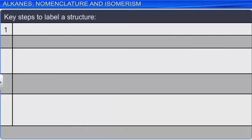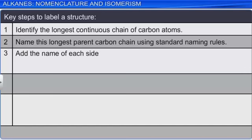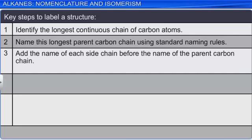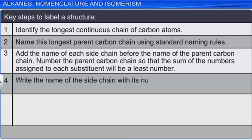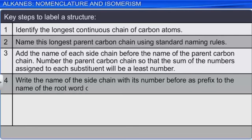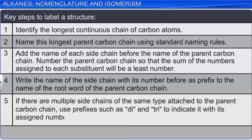The key steps to label a structure are: identify the longest continuous chain of carbon atoms; name this longest parent carbon chain using standard naming rules; add the name of each side chain before the name of the parent carbon chain; number the parent carbon chain so that the sum of the numbers assigned to each substituent will be the least; write the name of the side chain with its number as a prefix to the root word of the parent carbon chain; and if there are multiple side chains of the same type, use prefixes such as di and tri to indicate them with their assigned numbers.